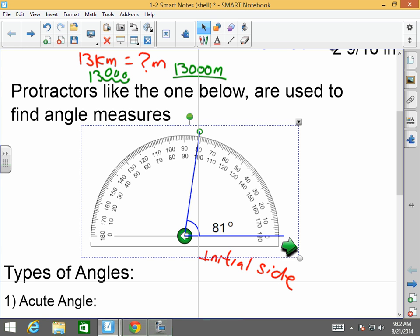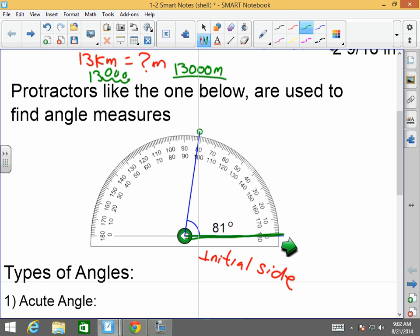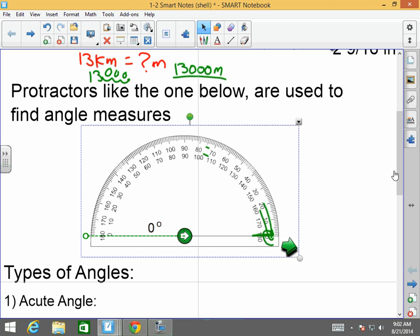A protractor has two levels, and you must be cognizant of which level you're using. If my initial side is over here, which in this case it is, I'm starting at the zero. I'm at the top level. And as I go up and up and up, I read this top level. Does that make sense?